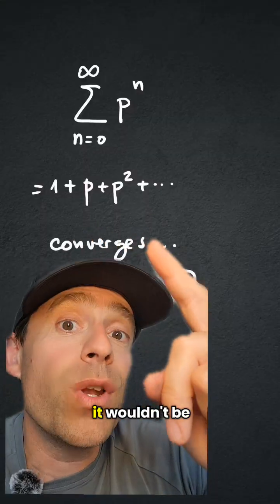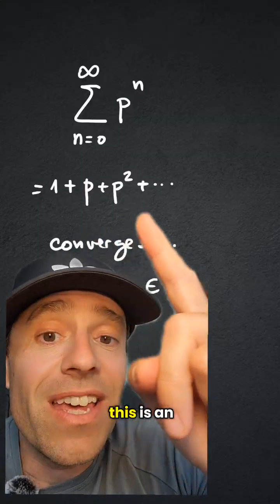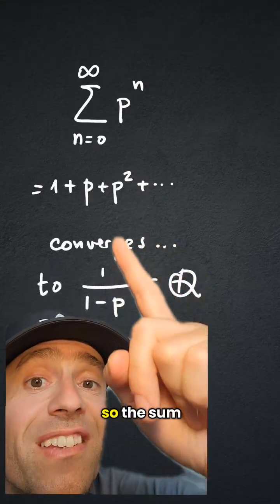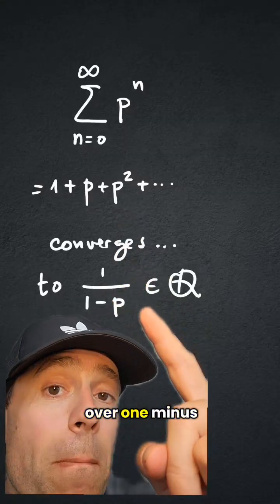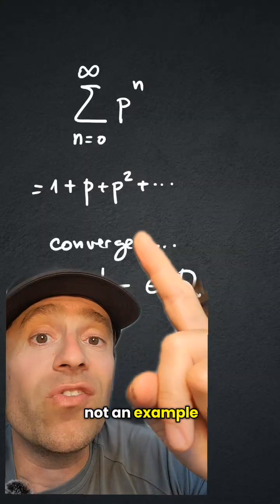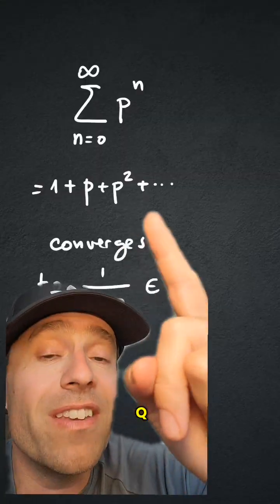It looks like it wouldn't be in Q, but in fact, this is an element of Q because this is a geometric series, so the sum of a geometric series is 1 over 1 minus p, which is a rational number. So this is not an example of something in Q_p that is not in Q, this is in Q.